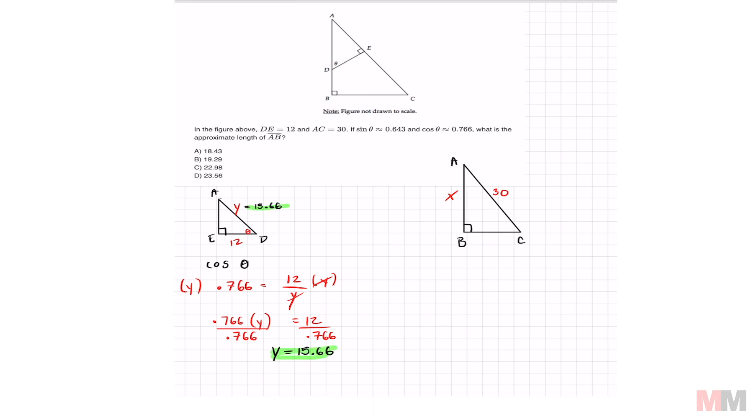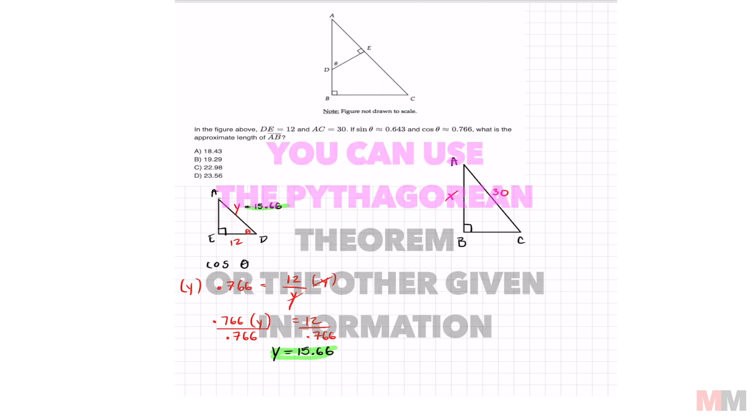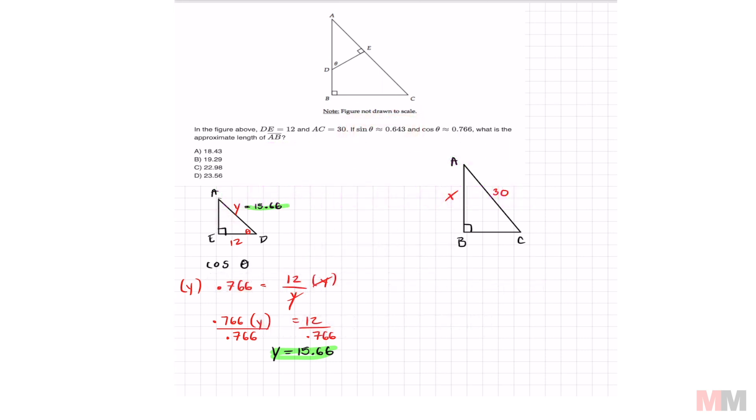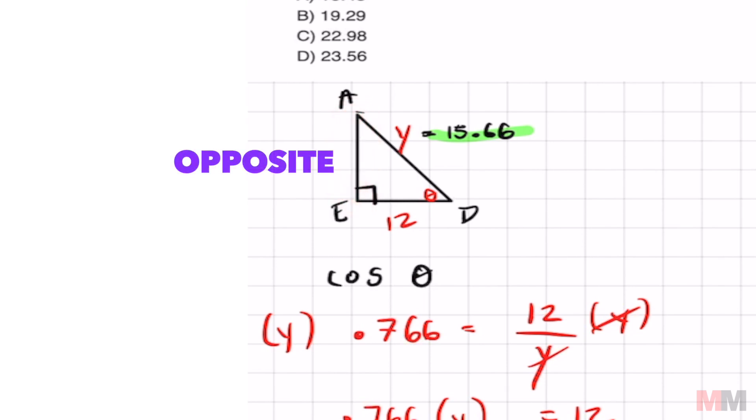So now that I have a hypotenuse I can find the opposite length from here. You can do Pythagorean theorem but we might as well use this information right here because this leg is going to represent my opposite leg from theta. Let's call that Z.